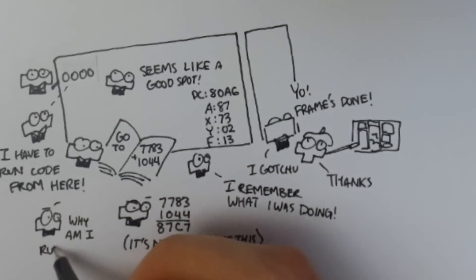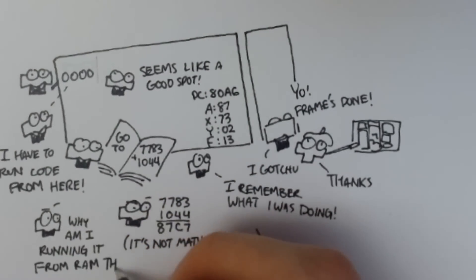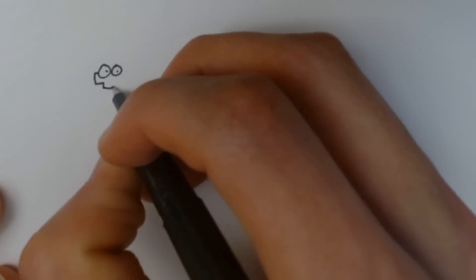Something I haven't mentioned yet is that code and data are not distinct in the NES. All are written purely in bytes, so you can just as easily read data as code and code as data, although the results usually are not good.